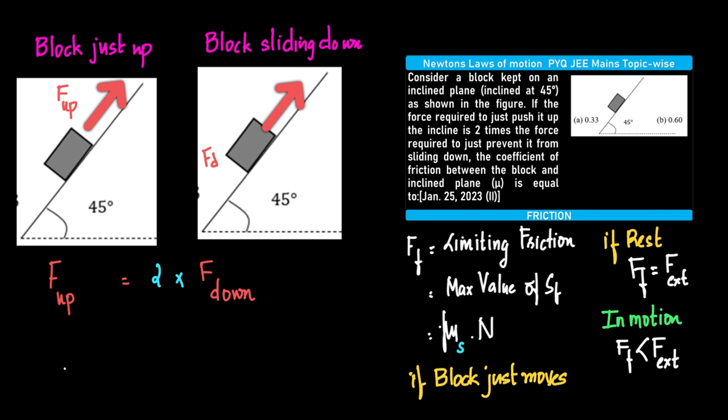Consider a block kept on an inclined plane at 45 degrees. The force required to just push it up is two times the force required to just prevent it from sliding down.